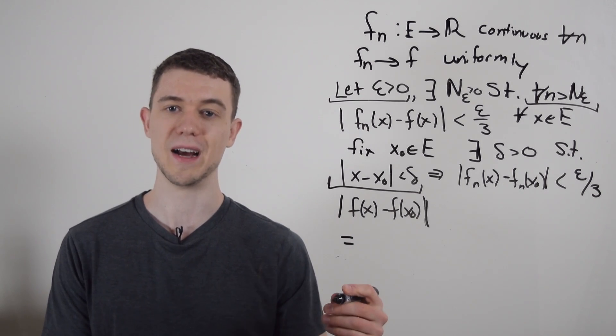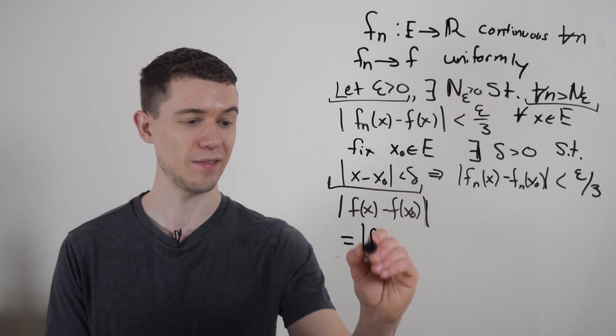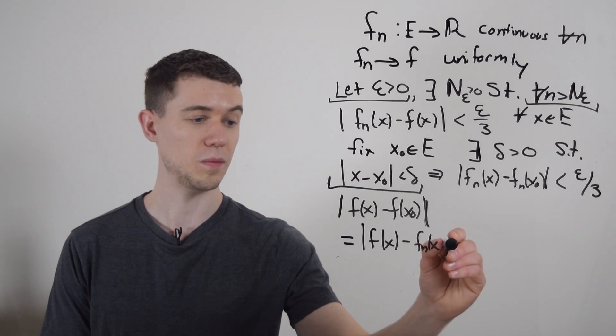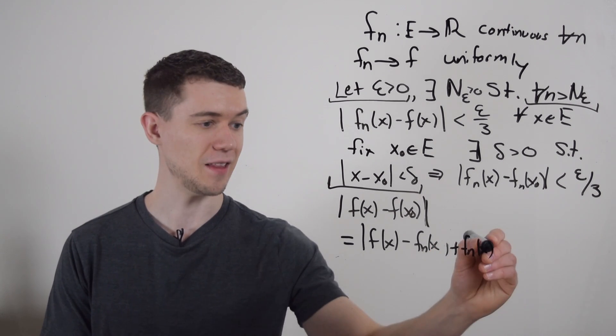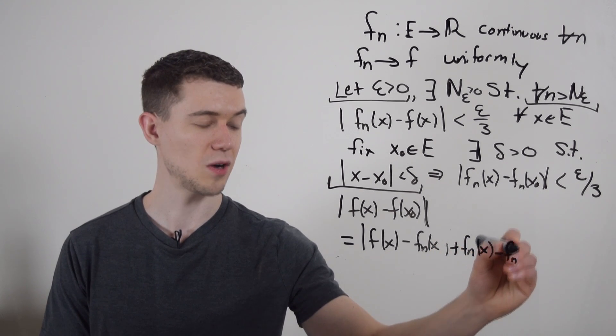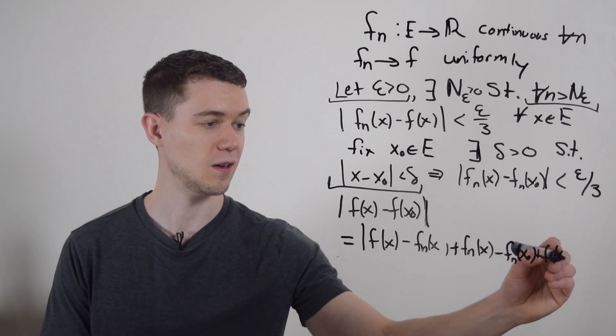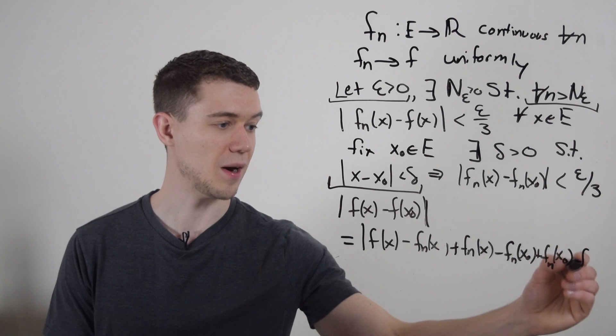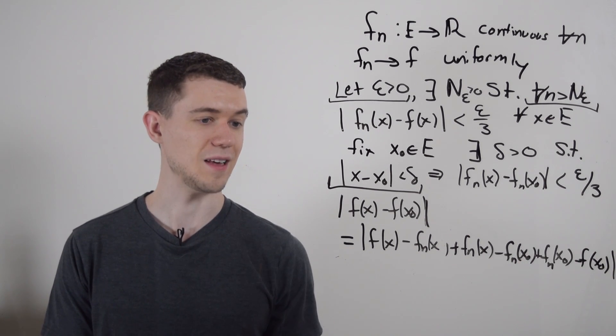And so I'm going to do a classic real analysis trick, I'm just going to add by zero a bunch. So I have f of x, I'm going to subtract f sub n of x, which means to make it zero, I'd have to add f sub n of x. And then I'm going to subtract f sub n of x naught, which means I'd have to add f sub n of x naught to make it a zero. And then I still have that minus f of x naught at the end there.